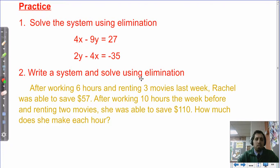I'm going to leave you some practice problems on your own, as always. The first one is pretty well set up for you. 4X minus 9Y equals 27, and 2Y minus 4X equals negative 35. Find the values of those two variables, or find the intersection point. That would probably be the best way to describe it. And then 2 says write a system, and then, so you're going to have to figure out some equations, and then solve using elimination. This says, after working 6 hours and renting 3 movies last week, Rachel was able to save $57. After working 10 hours the week before and renting 2 movies that week, she was able to save $110. How much does she make each hour? So this is another one where you'll have to find out what are the variables that we don't know, and how can you solve from using elimination. Best of luck. You'll do good.